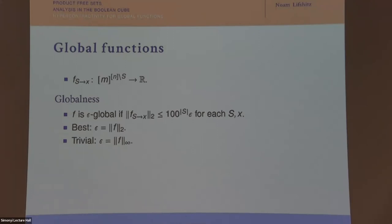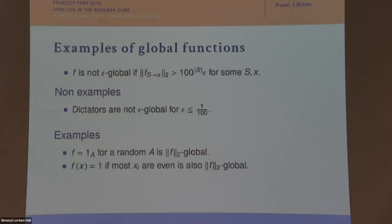The best ε you can take is the L2 norm of f itself — that's the best globalness notion where you expect to recover everything on the Boolean cube. There's also the trivial ε: the infinity norm. When ε is better than trivial, you get better-than-trivial results, and when ε is best (equals the L2 norm), you recover everything on the Boolean cube.